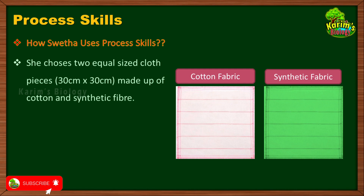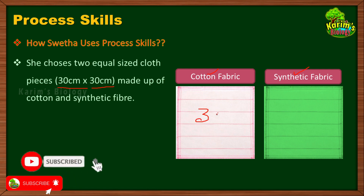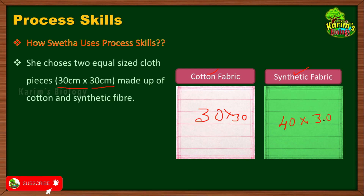She chooses two equal-sized cloth pieces, each having a length of 30 centimeters and a breadth of 30 centimeters. She selected cotton fabric and synthetic fabric, but she has to make sure both fabric pieces have the same length and breadth. If Sweta takes cotton fabric of 30x30 and synthetic fabric of 40x30, there is a difference in size.